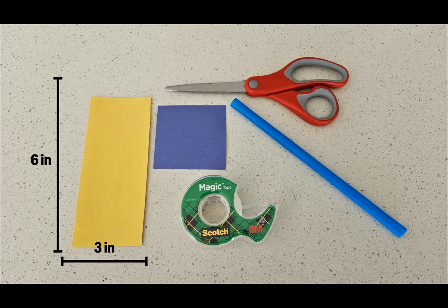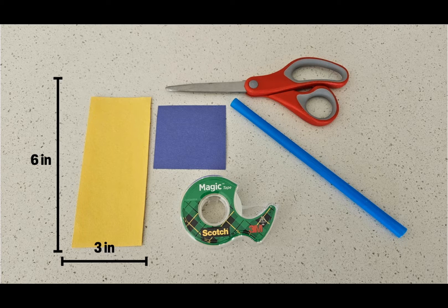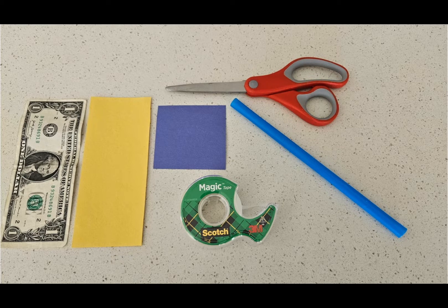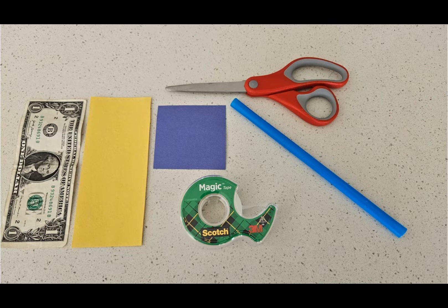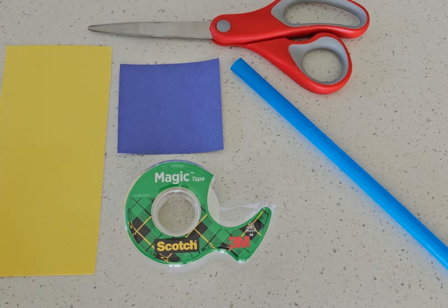We will need two pieces of construction paper for this activity. The first piece should be about six inches by three inches. If you don't have a ruler handy, just use a dollar bill for reference. The second piece of construction paper can be any scrap piece. Mine's about the size of a post-it note. All right, let's dive into the build.